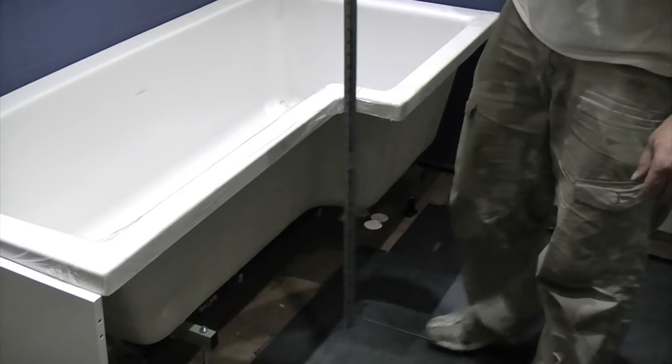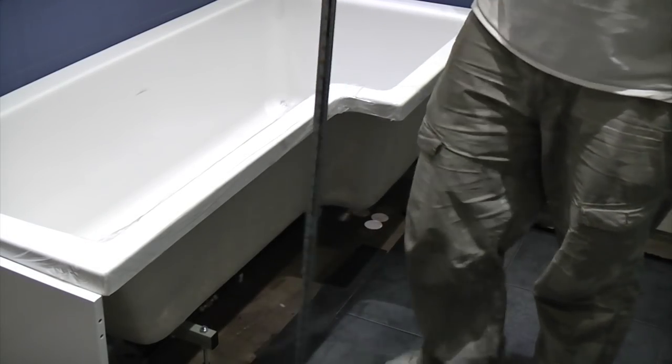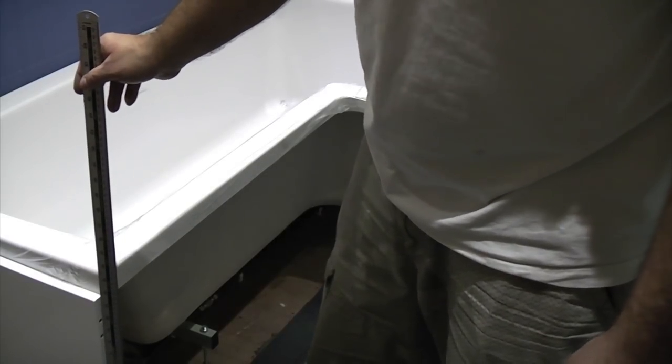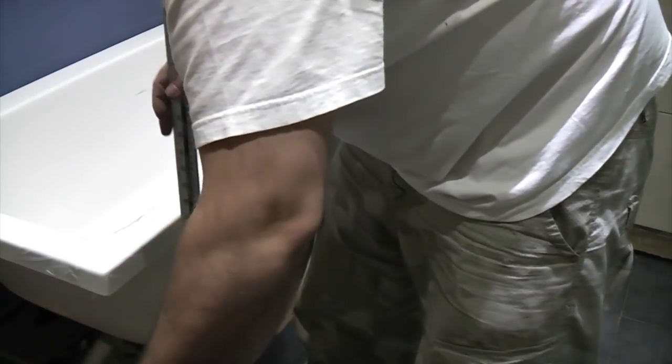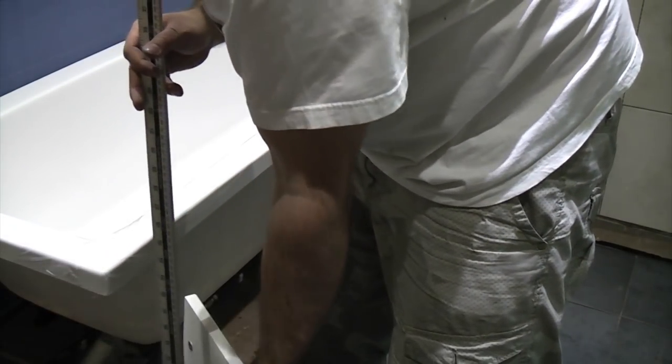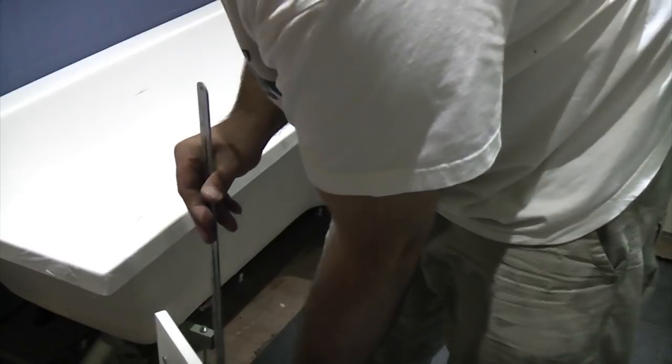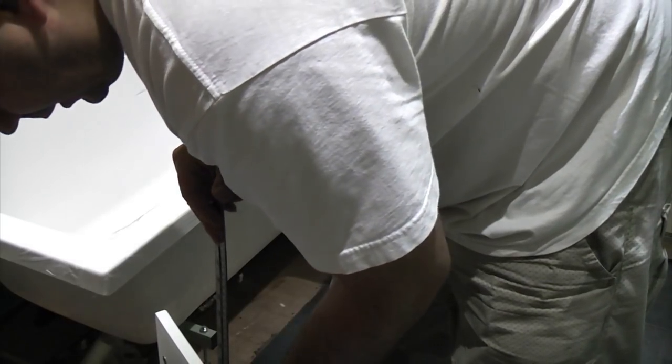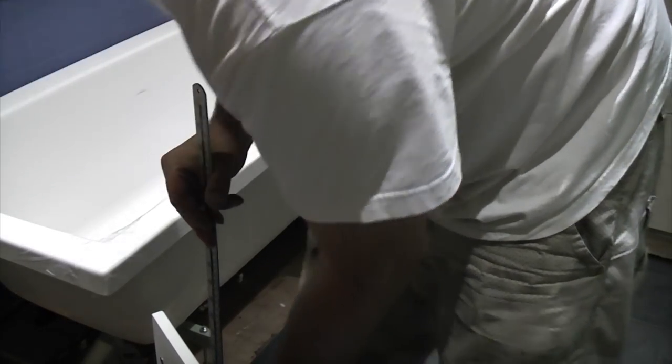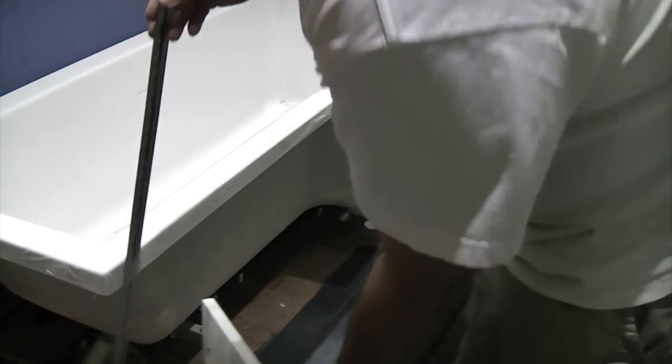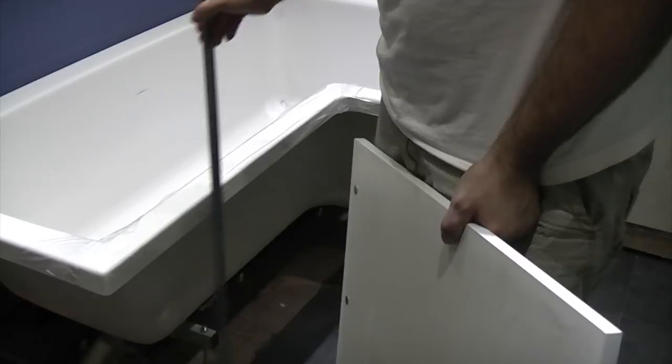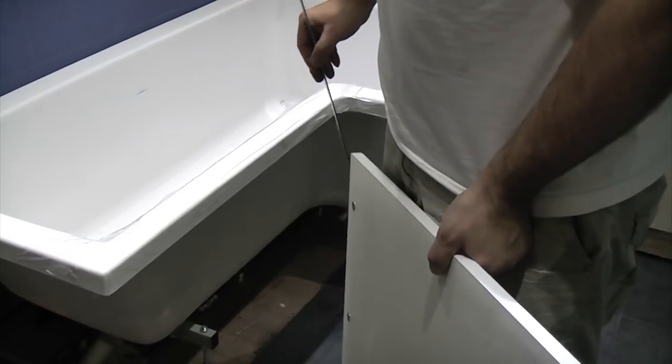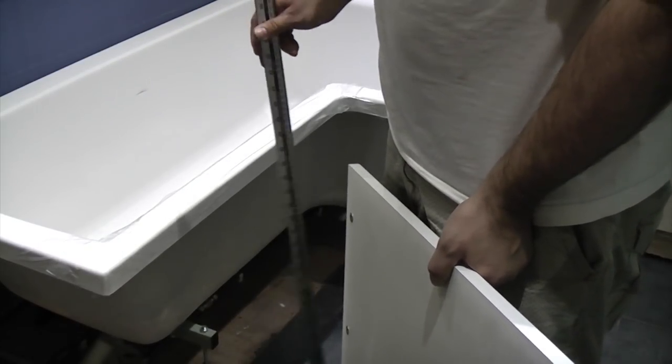We're now ready to fit and level the bath. To determine the height of the bath, you need to measure your actual panel for your bath and set your bath to the height of the panel. This particular one is 545mm. If you put it down on a flat surface and measure it, we've got 545mm. So we need to set the edge of the bath to 545mm from the tiles and ensure that it's level. That should be the correct height for fitting the bath panel.